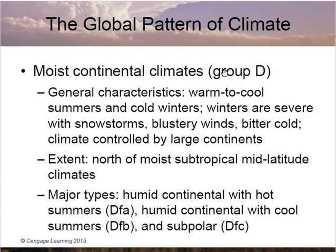Group D climates are moist continental climates with warm to cool summers and cold, severe winters with snowstorms, blustery winds, and bitter cold. The climate controls depend on whether you're on a large or small continental landmass. Our local area might fall into the D group in some places, though Mr. Conti suggests Widener itself would lean more toward the C group — very similar to Mobile's climate, with decent precipitation all year and cold but not brutally cold winters.